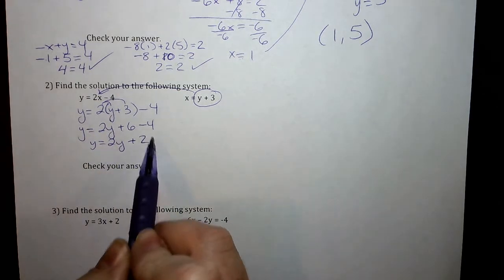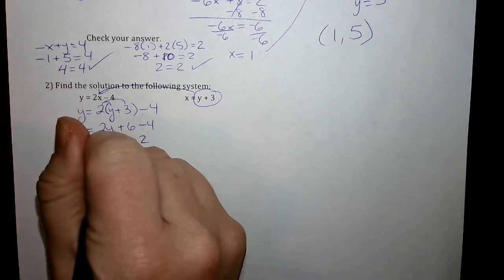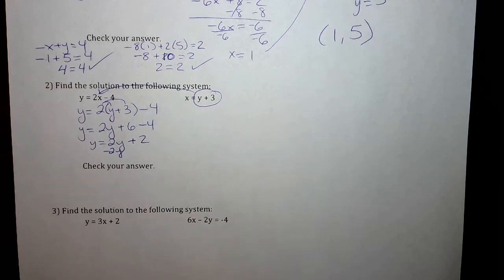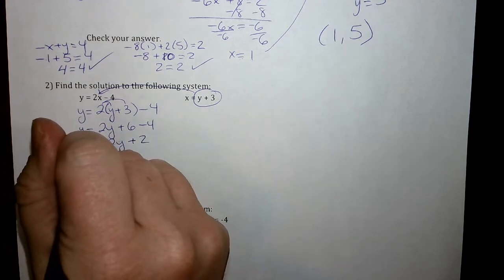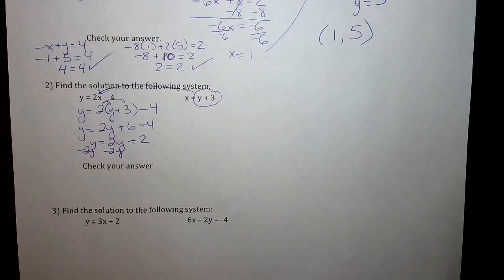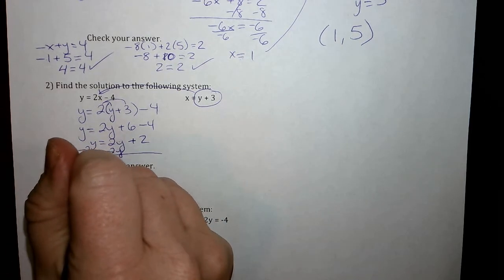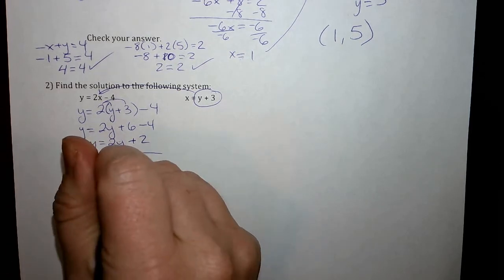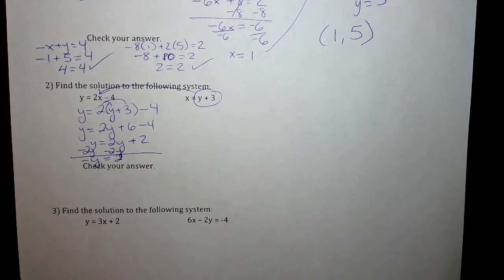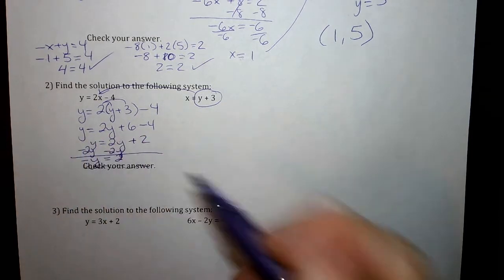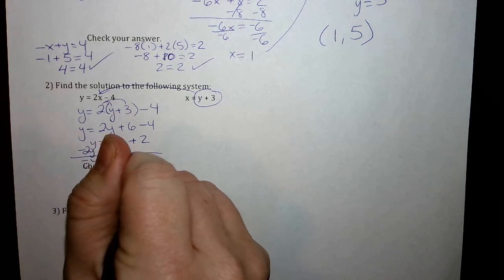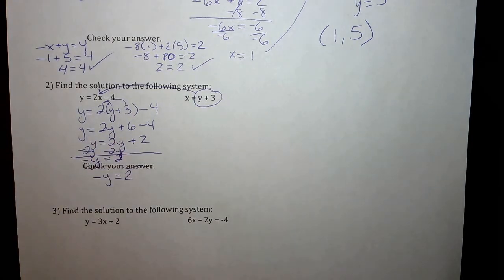And now since my constant is over here, I want to move my variable over here. So since this is positive 2y, we're just doing inverse operations and solving equations for the variable. It's just variables on both sides back from unit one. Y minus 2y is going to be negative y equals positive 2.